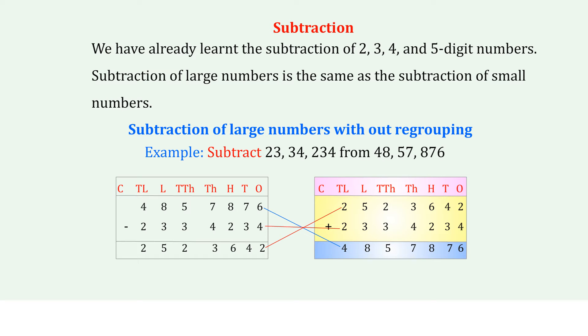Checking — place the answer 2,5,2,3,6,4,2 in the table under Crores, Ten Lakhs, Lakhs, Ten Thousands, Thousands, Hundreds, Tens, Ones. Add back the subtracted number 2,3,0,3,4,2,3,4. After addition, we get 4,8,0,5,7,8,7,6, which confirms the original dividend.